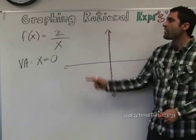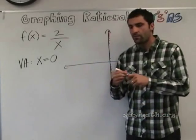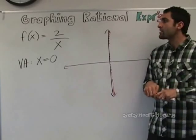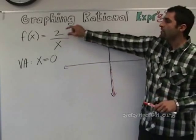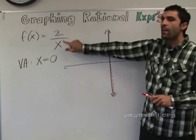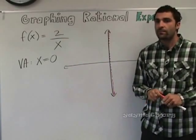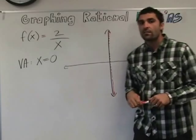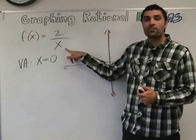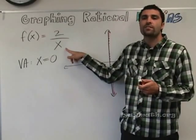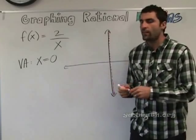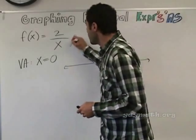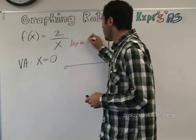Now let's talk about horizontal asymptotes. Look at the top of your paper and let's talk about the degree of the numerator and the degree of the denominator — there are three different situations. You guys know what the degree of the denominator is, right? What's the degree of the denominator? 1 — very good, because it's an exponent of 1. So this is degree 1.